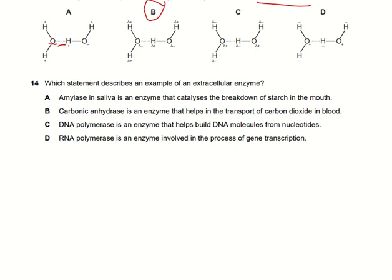Which statement describes an example of an extracellular enzyme? Amylase in the saliva catalyzes the breakdown of starch in the mouth — this is extracellular. Carbonic anhydrase functions inside the cell — intracellular. DNA polymerase also works inside the cell. RNA polymerase is involved in gene transcription, also intracellular. The extracellular enzyme is amylase, released in the mouth to digest starch from food. So option A is the right answer.